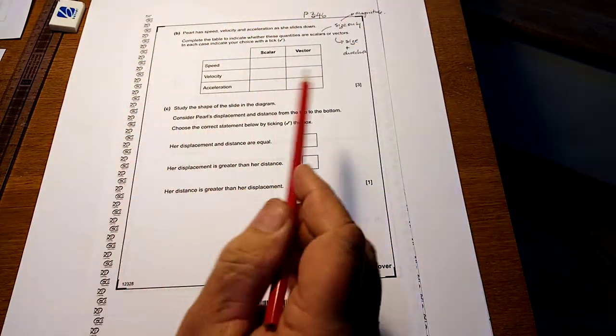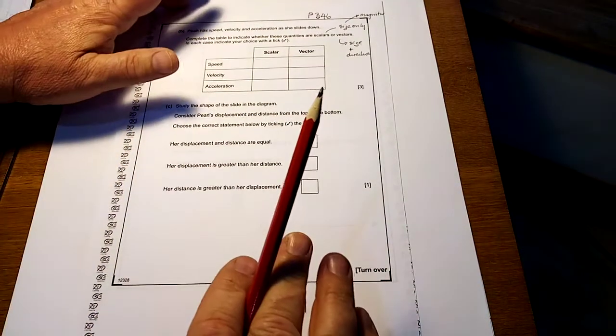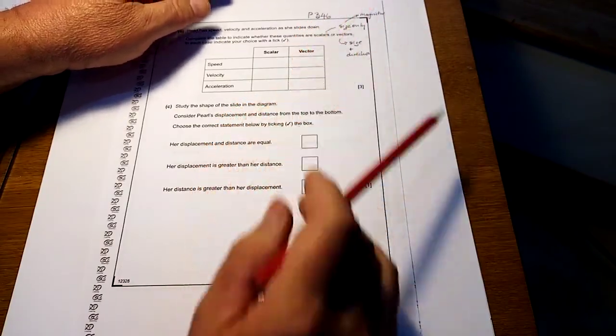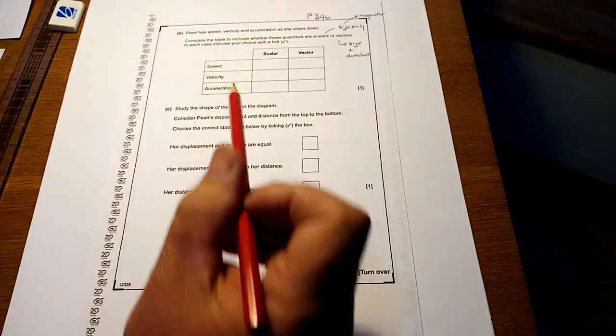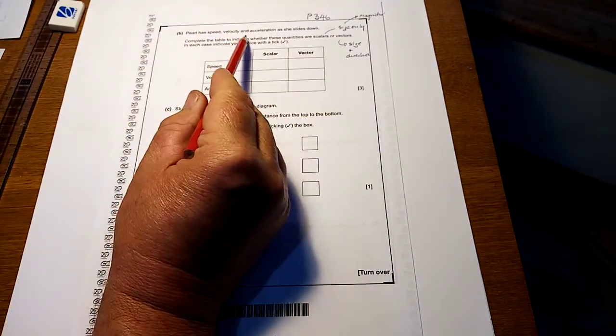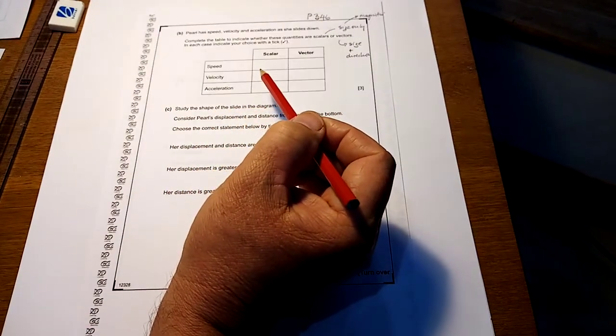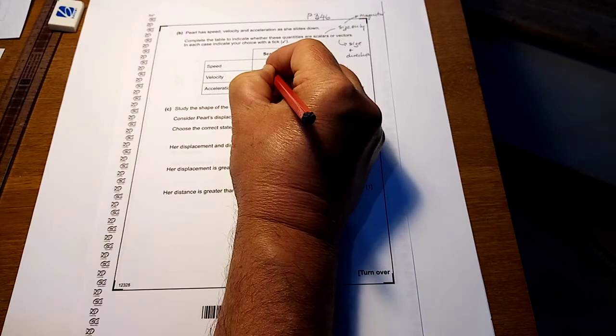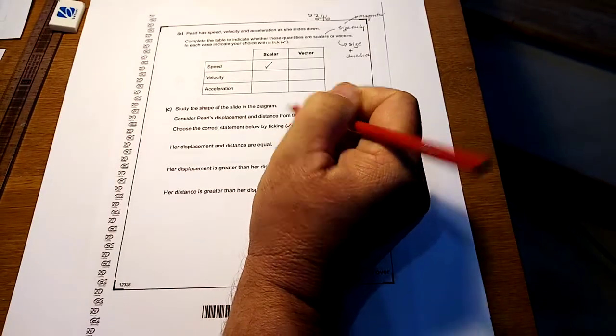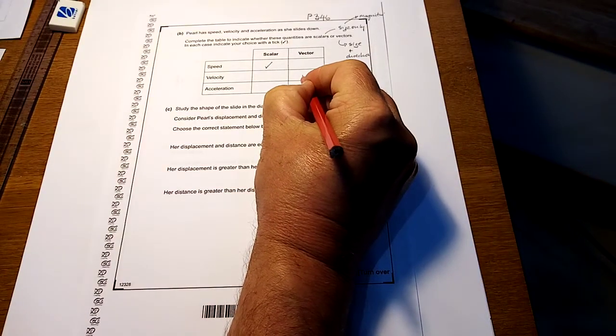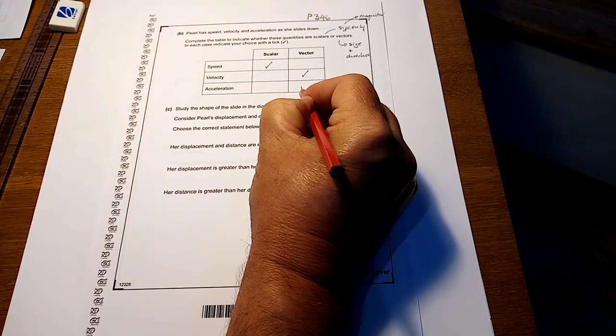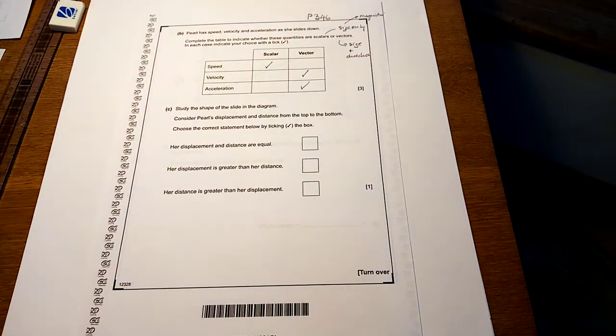And again, if you're finding this, you don't know what I'm talking about, have a look at page 346. It's all on it. Complete the table and indicate with a tick whether these quantities are scalars. I have bad news for you. You have to learn this. I know that speed is a scalar. I know that velocity is a vector. And I know that acceleration is a vector. Learn them. Learning takes time. Practice makes study easier.